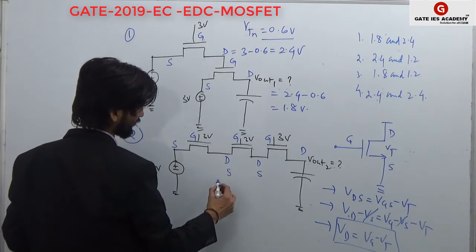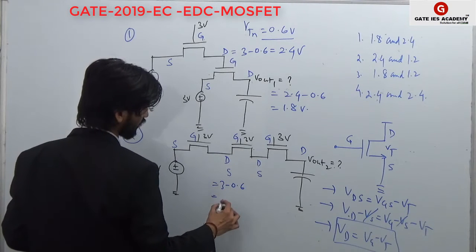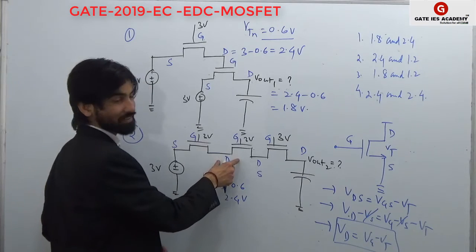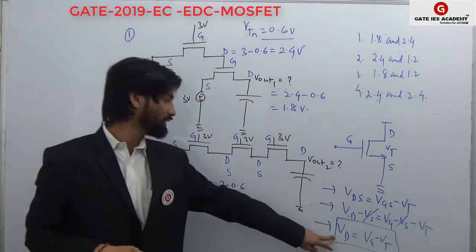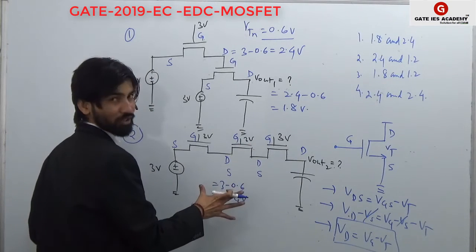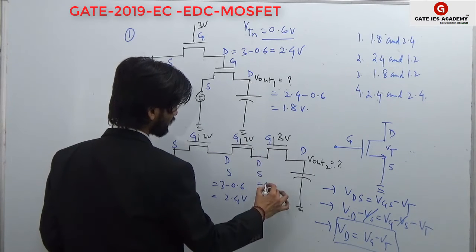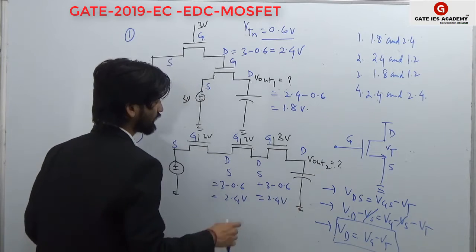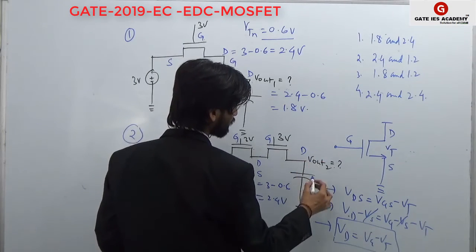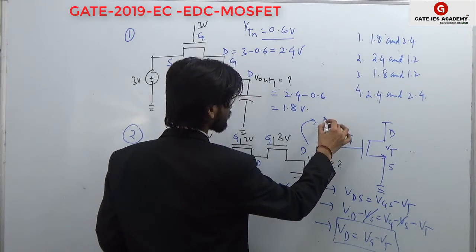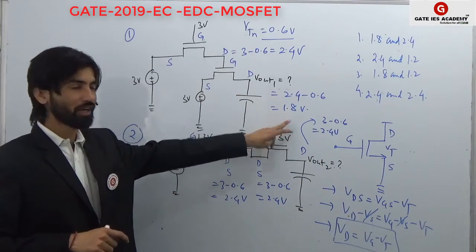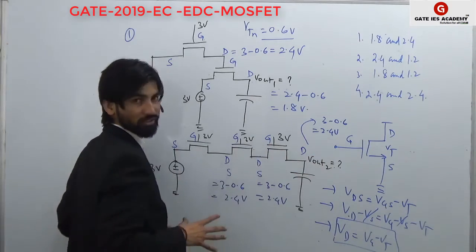For the second circuit, at this point we can find 3 minus 0.6, so it will be 2.4 volts. And again, it will be independent here. As I told you, Vd equals Vg minus Vt — your Vd is always independent of the source voltage. So again, at this point we can find 3 minus 0.6 equal to 2.4. And again, 3 minus 0.6 equal to 2.4. So Vout2 will be 2.4.